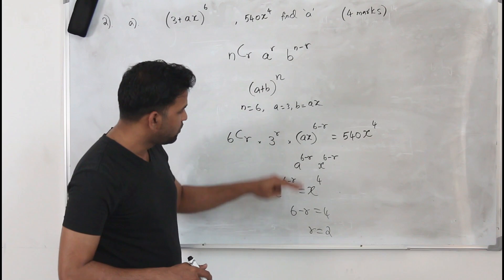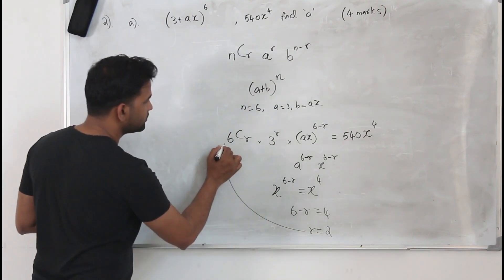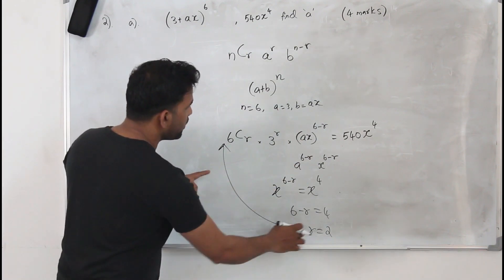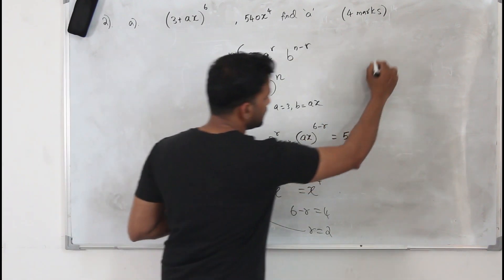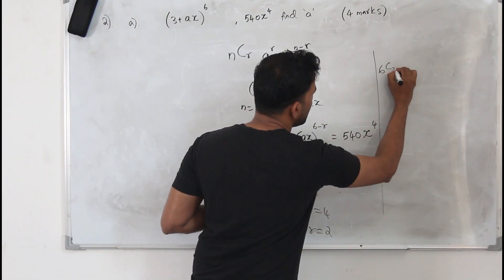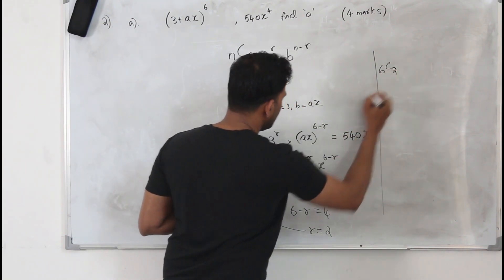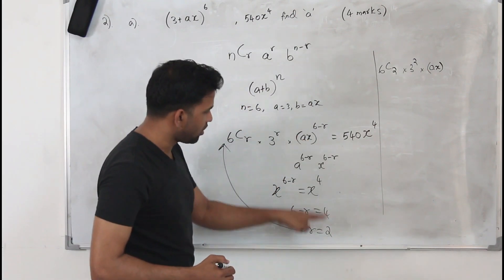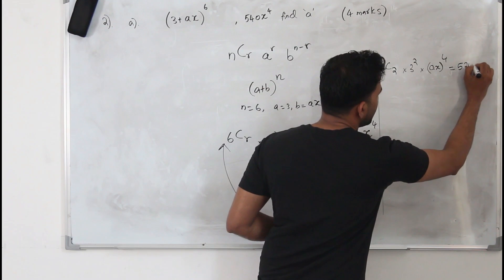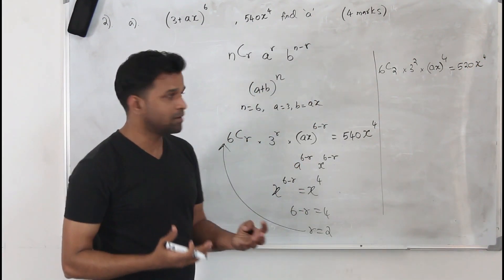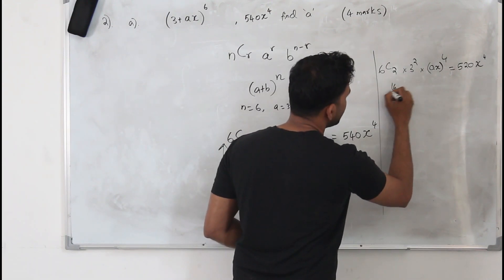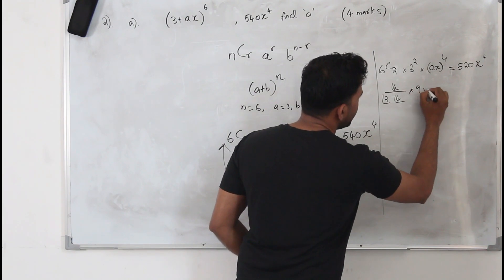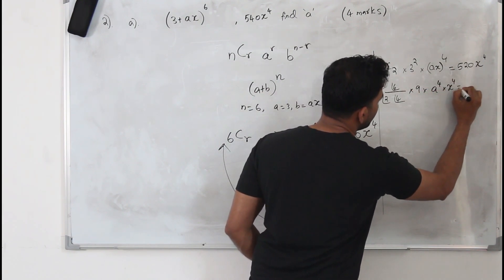That is our first step — we find r = 2 and substitute back into the nth term formula. So we get 6C2 × 3^2 × (ax)^4, which equals 540x^4. Now simplify: 6C2 is 6! / (2! × 4!), and 3^2 = 9, giving us 9 × (ax)^4 = 540x^4.